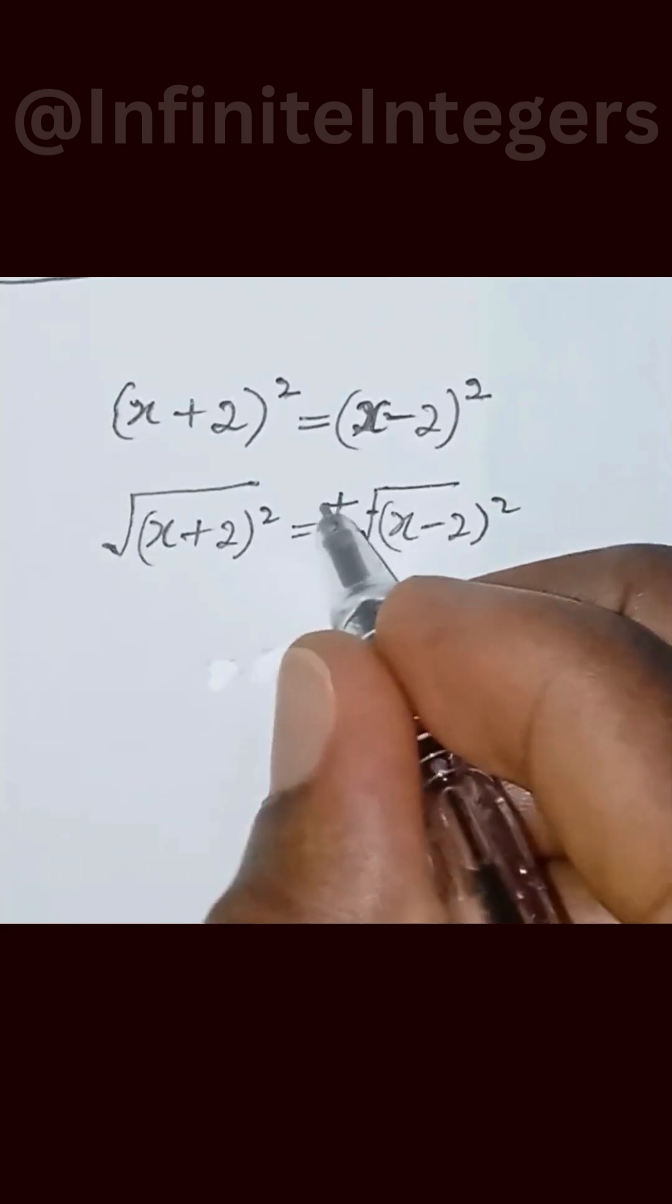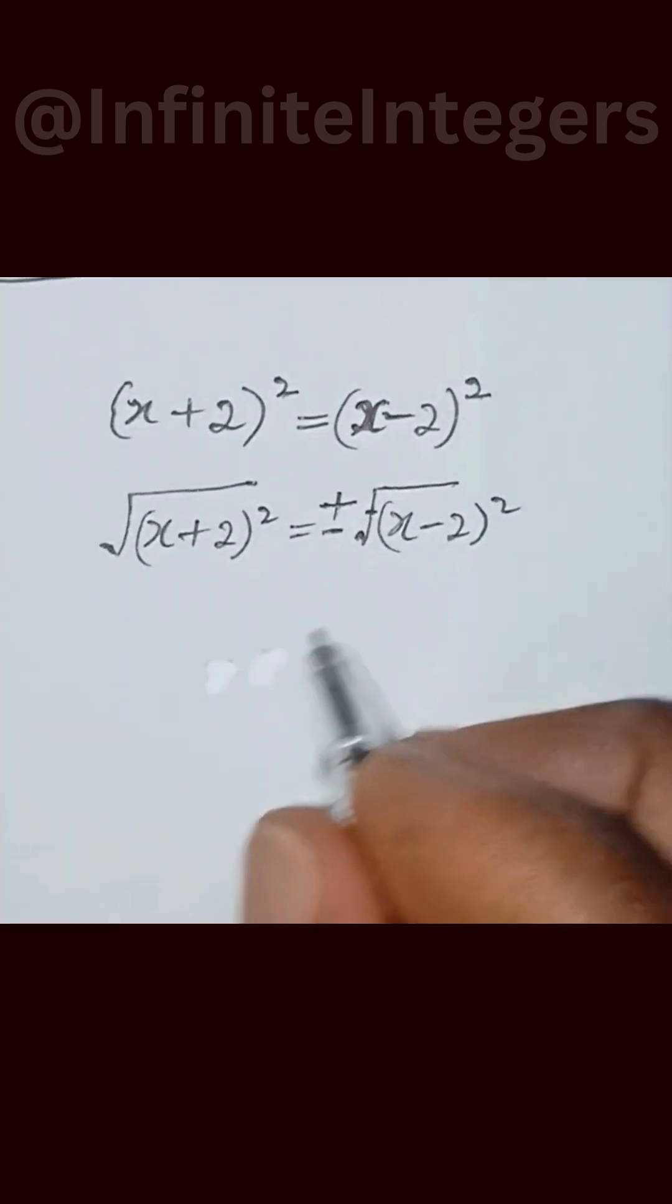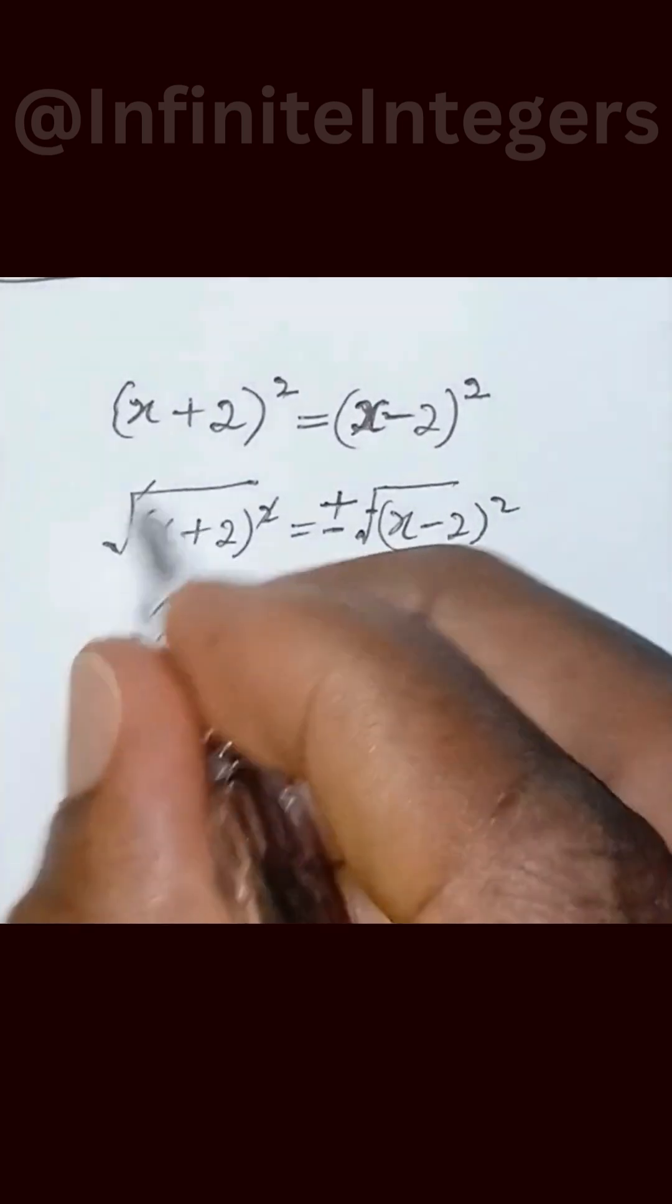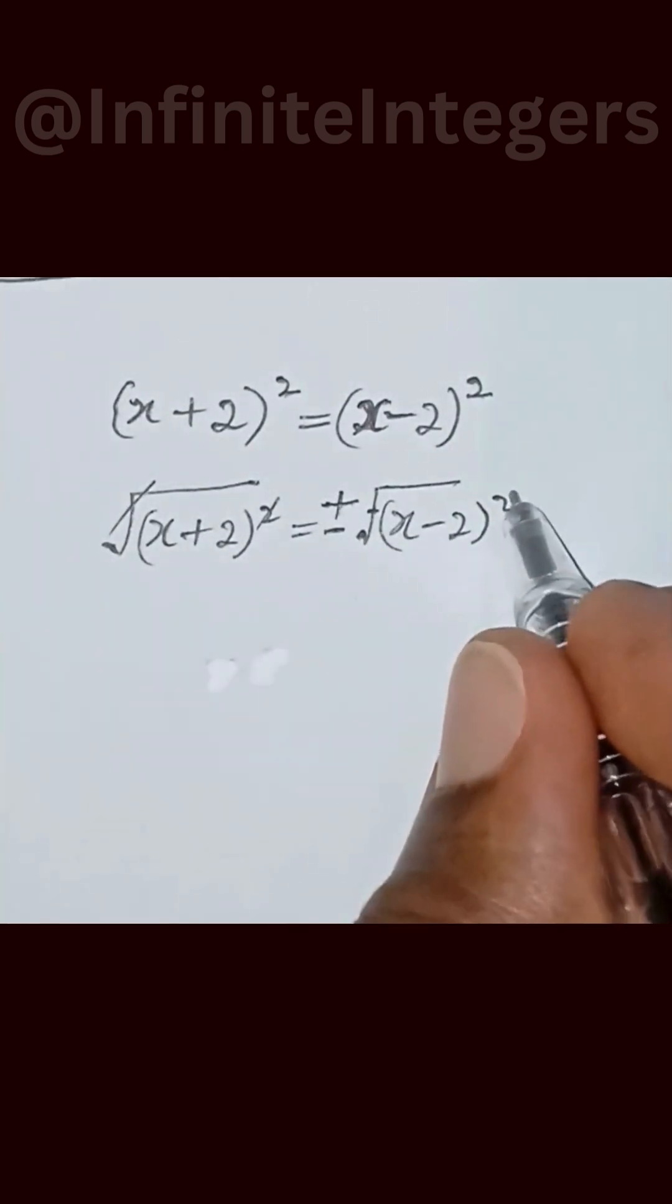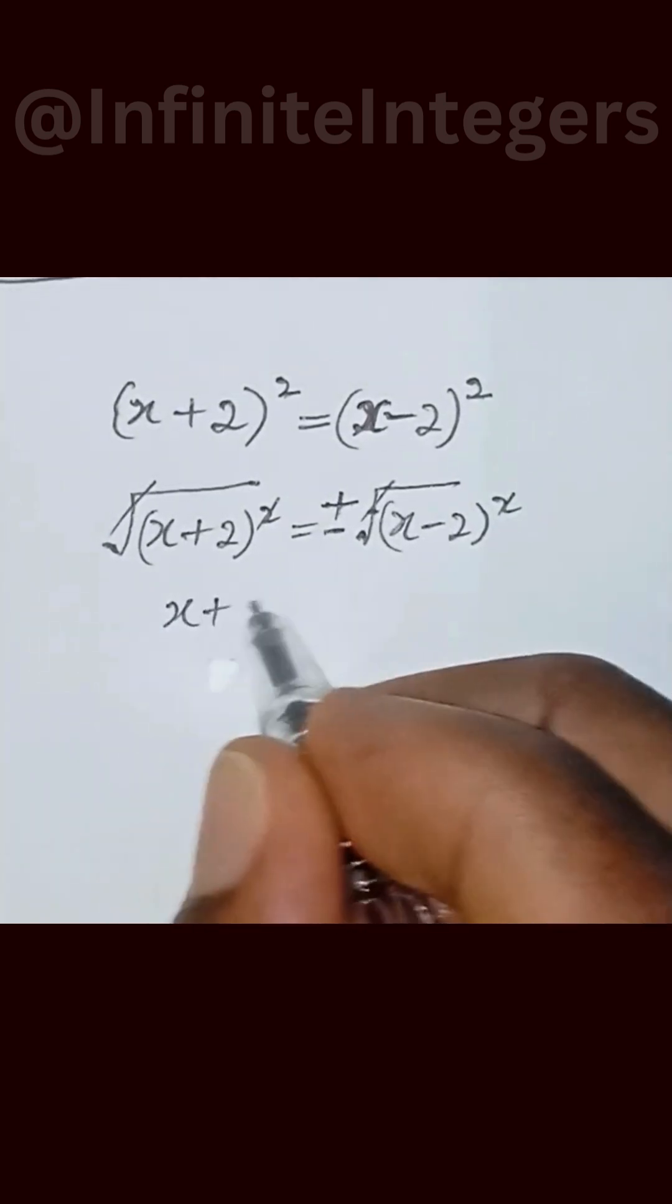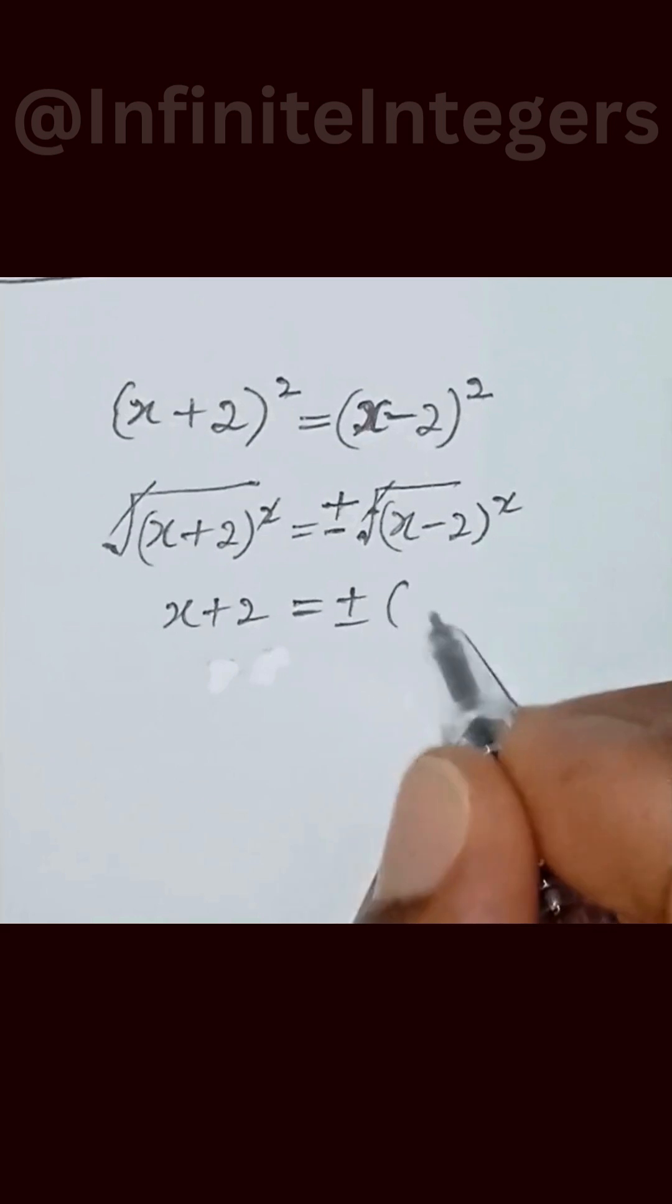Then plus or minus. Okay, we have this take care of this, and this take care of this. So we have x plus 2 equal to plus or minus into bracket x minus 2.